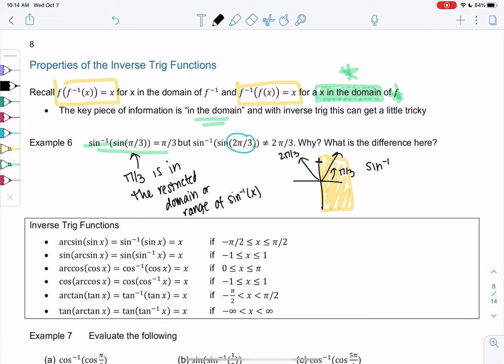And that would be π over 3. So in a weird way, sine inverse of sine of 2π over 3 is not 2π over 3, but it's π over 3. And that's because sine of 2π over 3 equals sine of π over 3. They have the same output. They have the same y value. But π over 3 is in the range of sine inverse.